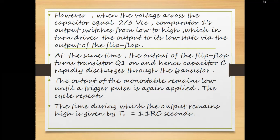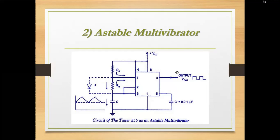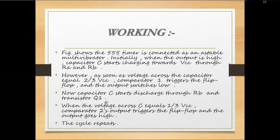The astable multivibrator has RA and RB interconnected between pins 2, 6, and 7. Initially when the output is high, capacitor C charges towards Vcc through RA and RB. When voltage across C reaches 2/3 Vcc, comparator 1 triggers the flip-flop and output switches low. Then C discharges through RB and transistor Q. When voltage across C equals 1/3 Vcc, comparator 2 triggers the flip-flop and output goes high again. The cycle repeats.